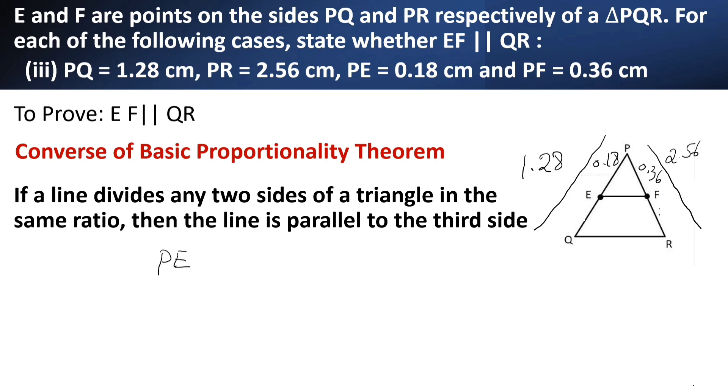PE by PQ. What is it? 0.18 divided by 1.28. This becomes 18 by 128. I think it won't get further simplified. So, leave it like that only.